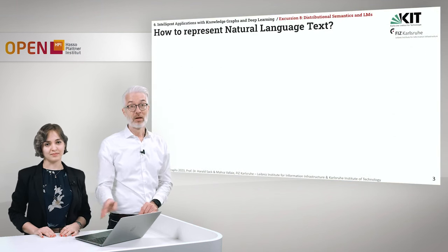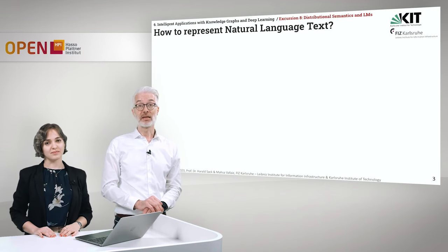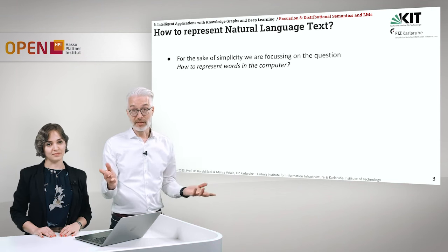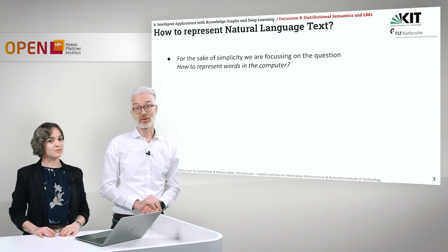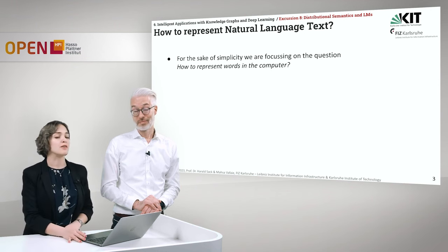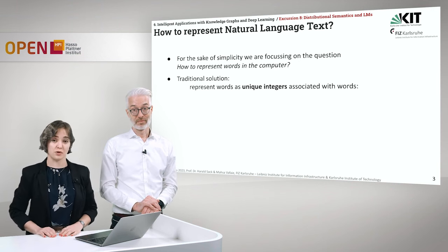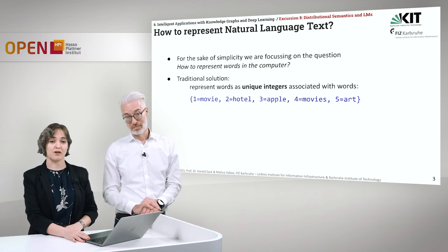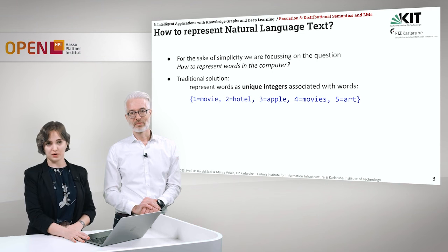What we are going to do first is ask ourselves: how can we represent natural language text in the computer? For the sake of simplicity, we are focusing on how to represent words of a language in the computer. One simple traditional solution would be to represent words as unique integers associated with those words. For example, if we have a vocabulary of five words, we can assign number 1 to 'movie', number 2 to 'hotel', number 3 to 'apple', and so on.